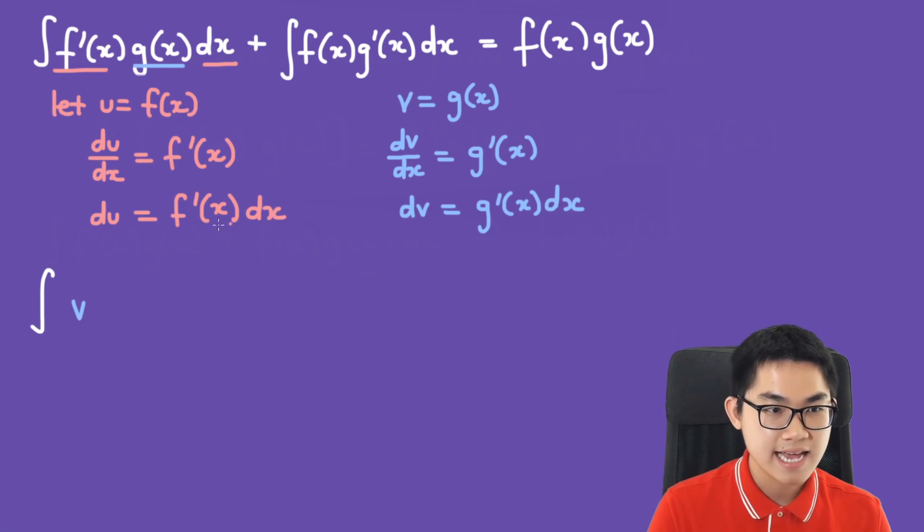Let's go ahead and substitute the u's and v's into this equation. Here we have the integral of v du, which is g(x) times f'(x) dx, plus the integral of u dv, which is f(x) times g'(x) dx. Finally we have f(x) times g(x), that is u times v.